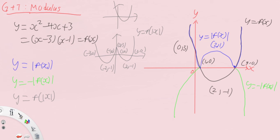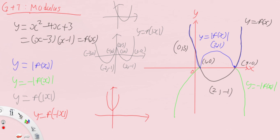If you want to sketch the graph of y equals f(minus mod x), you just need to flip the right-hand side here, and your graph will look something like this — going all the way to the point at x equals 0 and then going up like that. It's just like a pencil or a pen shape. That will be the graph of f(minus mod x). So there we have the modulus graphs of our quadratic equation.